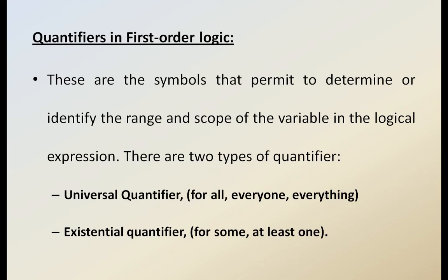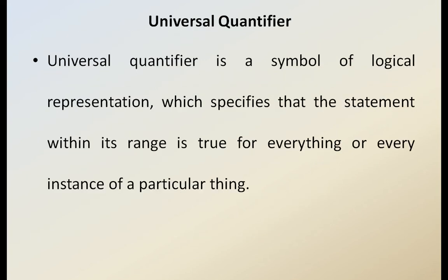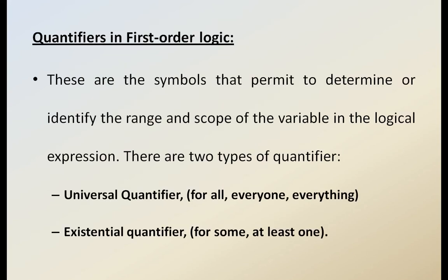Quantifiers are symbols that determine or identify the range and scope of a variable in a logical expression. First, we have the universal quantifier, represented as 'for all,' meaning everyone and everything. Sometimes we also use another kind of quantifier called the existential quantifier, which means 'for some' or 'at least one.' We must differentiate these two carefully: universal quantifier means for all; existential quantifier means for some or at least one.